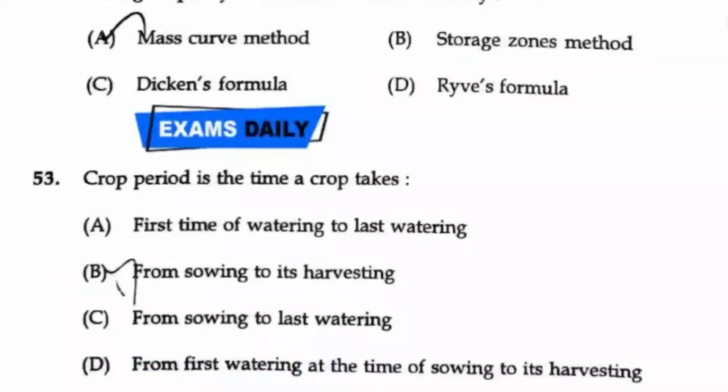Question number 53. The crop period is the time that a crop takes from sowing to its harvesting. Option B.